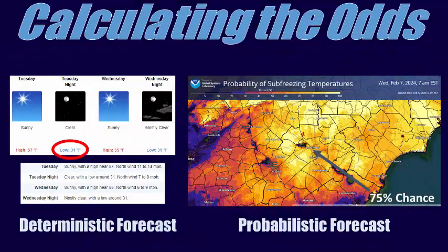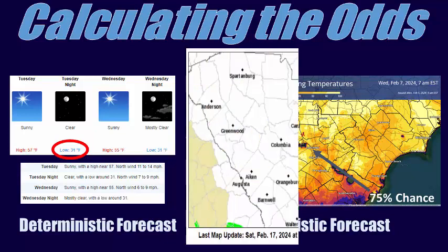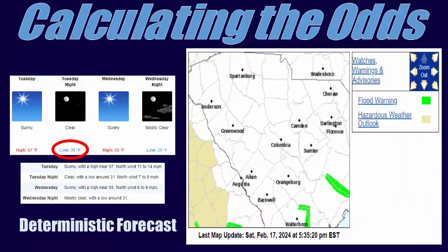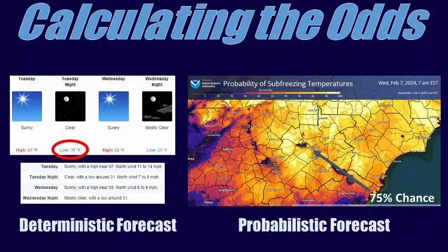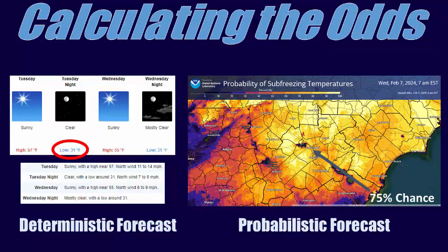So, what is probabilistic forecasting, and how does it differ from deterministic forecasting? Let's start with deterministic forecasting. The deterministic forecast calculates a singular value for a selected location. For example, you can view the forecast highs and lows on weather.gov through our point and click forecasts. While this is our best guess at the temperature on a given day, what happens in reality is often higher or lower than the given value, with accuracy often decreasing the further in time you go.